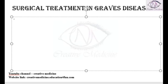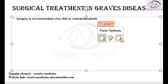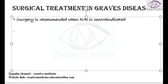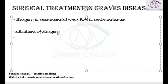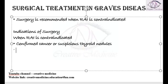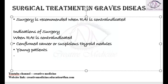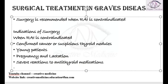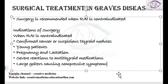Surgery is recommended in Graves disease when radioactive iodine therapy is contraindicated. Indications of surgery include: confirmed thyroid cancer, suspicious thyroid nodules, younger patients, pregnancy and lactation, severe reactions to thyroid medications, and larger goiters causing compressive symptoms to the patient.